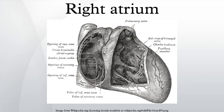The pectinate muscles form the muscular wall of the atria. The right atrial appendage is a pouch-like extension of the muscular part of the right atrium.